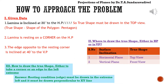The very first thing is: where should the true shape come? The true shape is nothing but the shape of the polygon. Where the true shape should come is decided by surface inclination. From the table, if the surface is inclined to the horizontal plane, the true shape should be drawn in the top view.